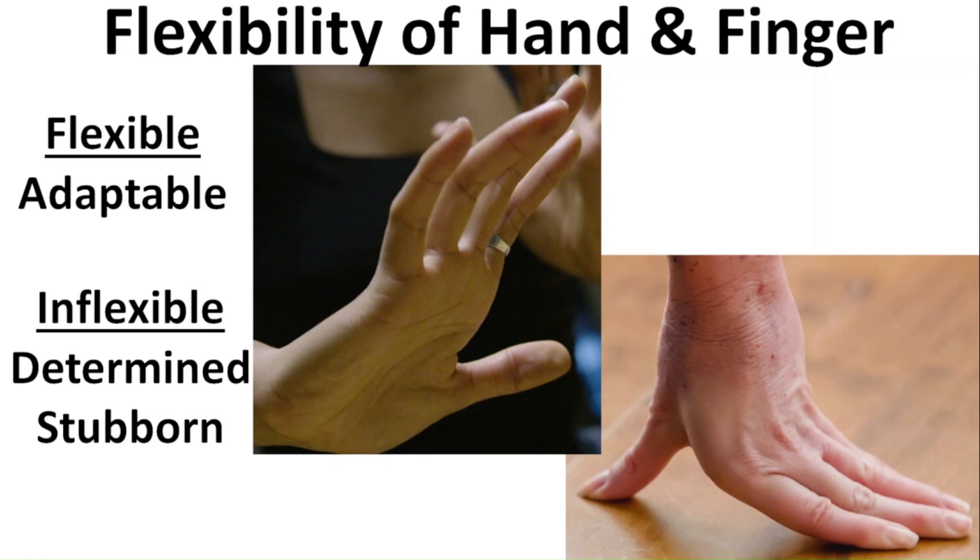If the right hand is more flexible than the left, it means the person has become more adaptable over time. Having a medium flexible hand can mean the person is determined. But if the hand is so stiff that the fingers don't bend back at all without hurting the person, then the person will likely be quite stubborn.